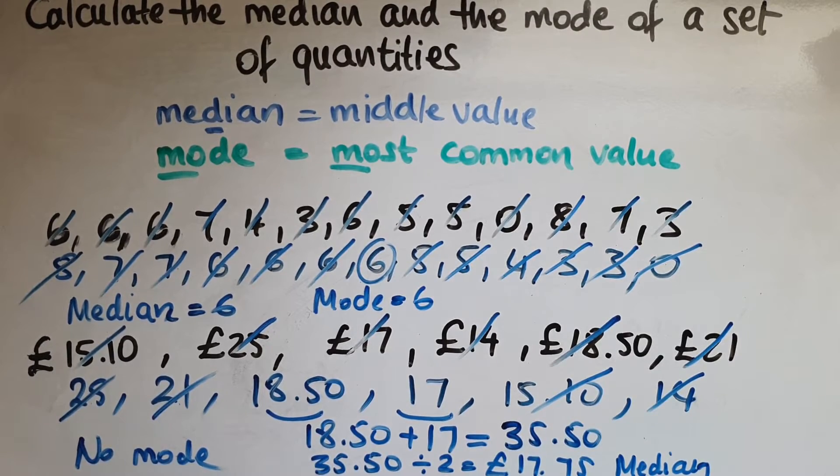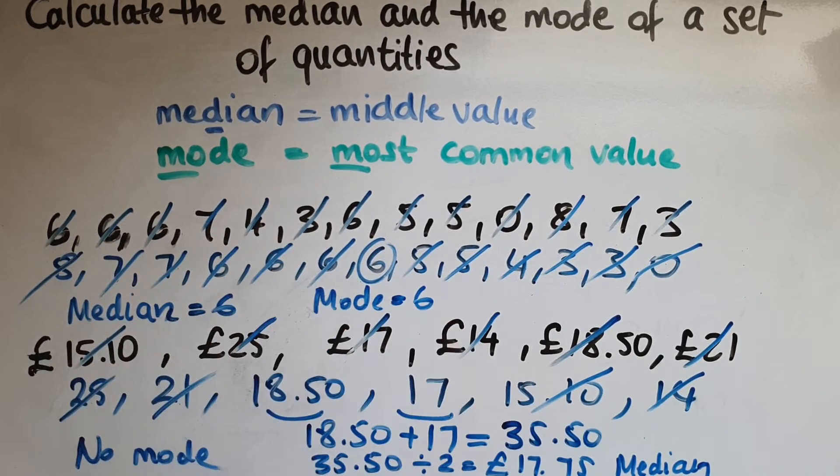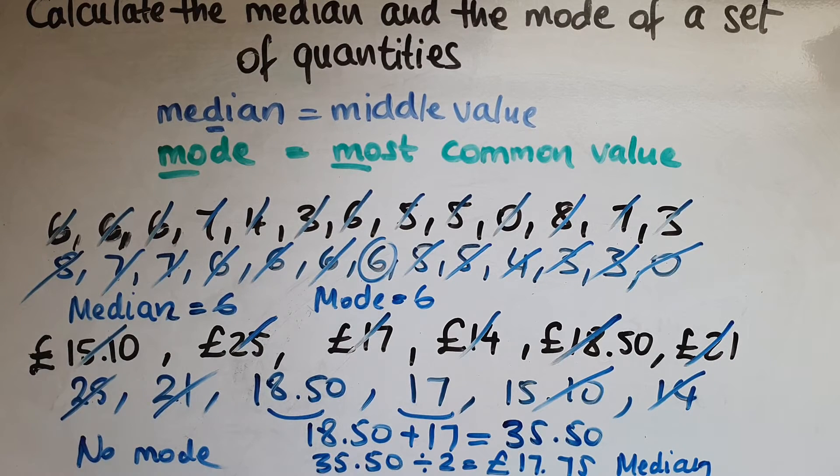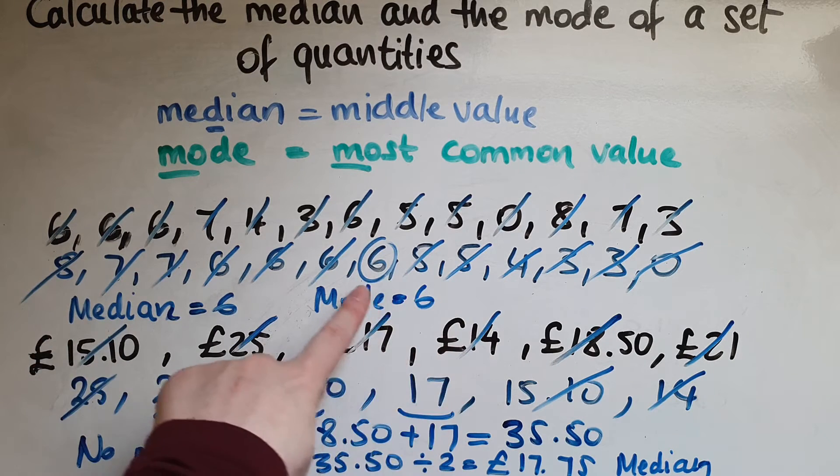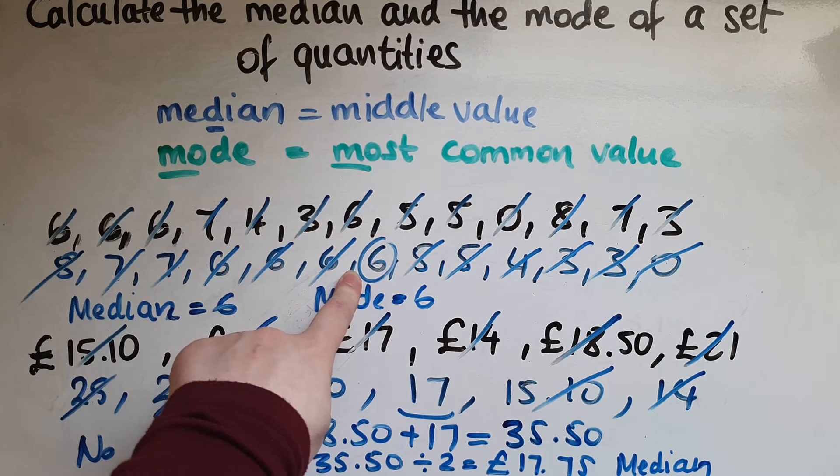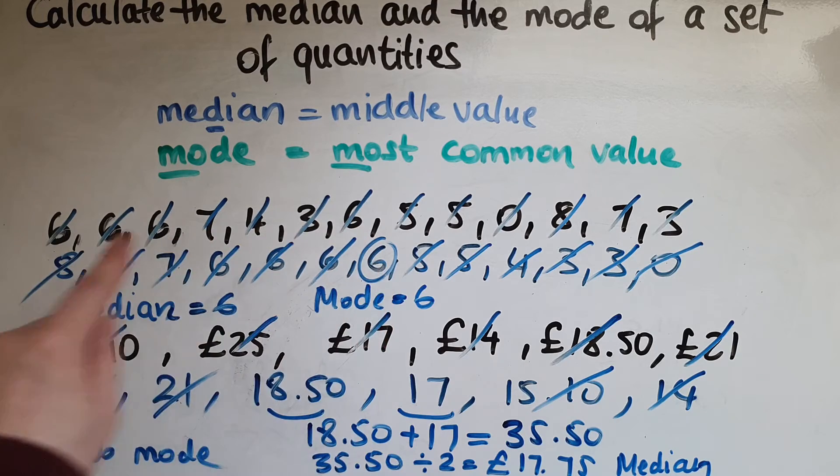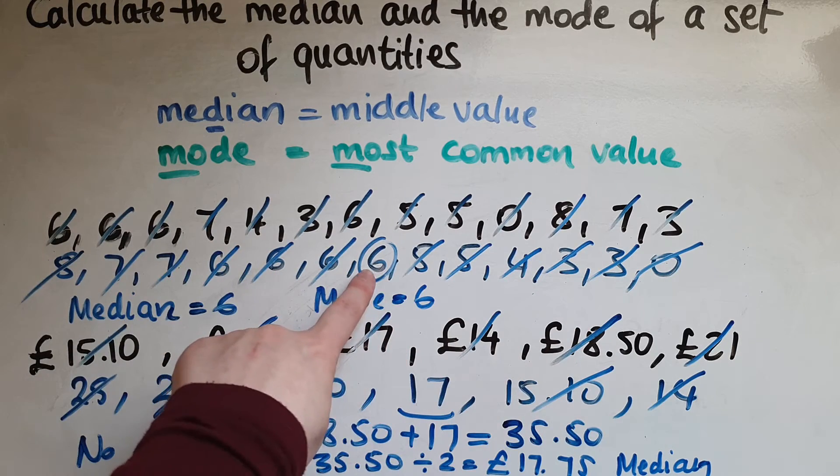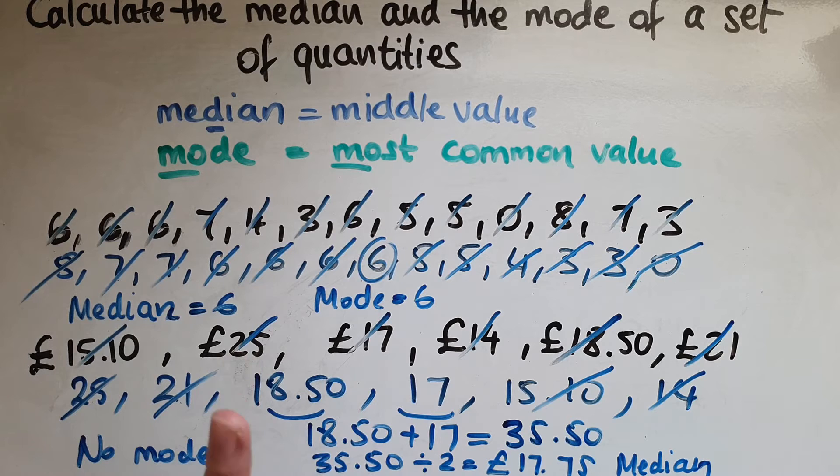So to summarize, median, we put them in order. Smallest to the largest or largest to the smallest and find the middle value. If there is an odd number of values like we had here, you can just easily find that by crossing numbers out from both sides. And that was a six. If there are two numbers in the middle, then we add them together and divide them by two, just like we did here.